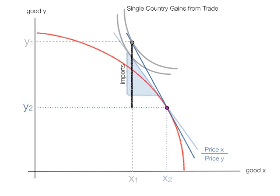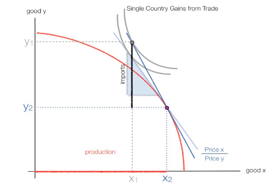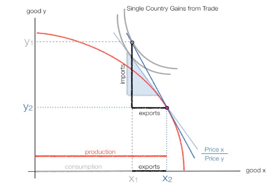Now, the country will produce the distance between 0 and X2 — that level right there. The country will consume at the gray line from the origin to X1. Since the country now produces more than it consumes, it has exports. The export level is the difference between X2 and X1.